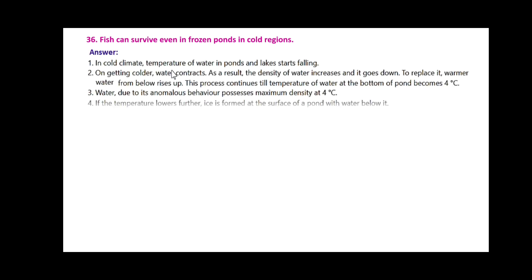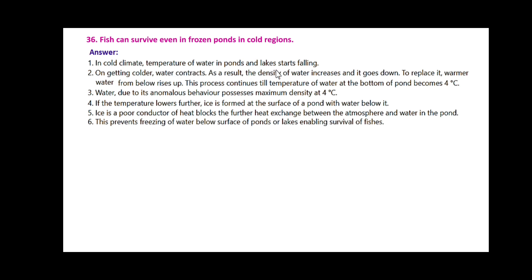Fish can survive even in frozen ponds in cold regions. In cold climates, temperature of water in ponds starts falling. As water gets colder, it contracts, its density increases, and it goes down; warmer water from below rises up. This process continues until the temperature of water at the bottom of the pond becomes 4 degrees Celsius. Water possesses maximum density at 4 degrees Celsius due to its anomalous behavior. If temperature lowers further, ice is formed at the surface of the pond. Ice is a poor conductor of heat and blocks further heat exchange between the atmosphere and water in the pond, preventing freezing of water below the surface and enabling survival of fish.